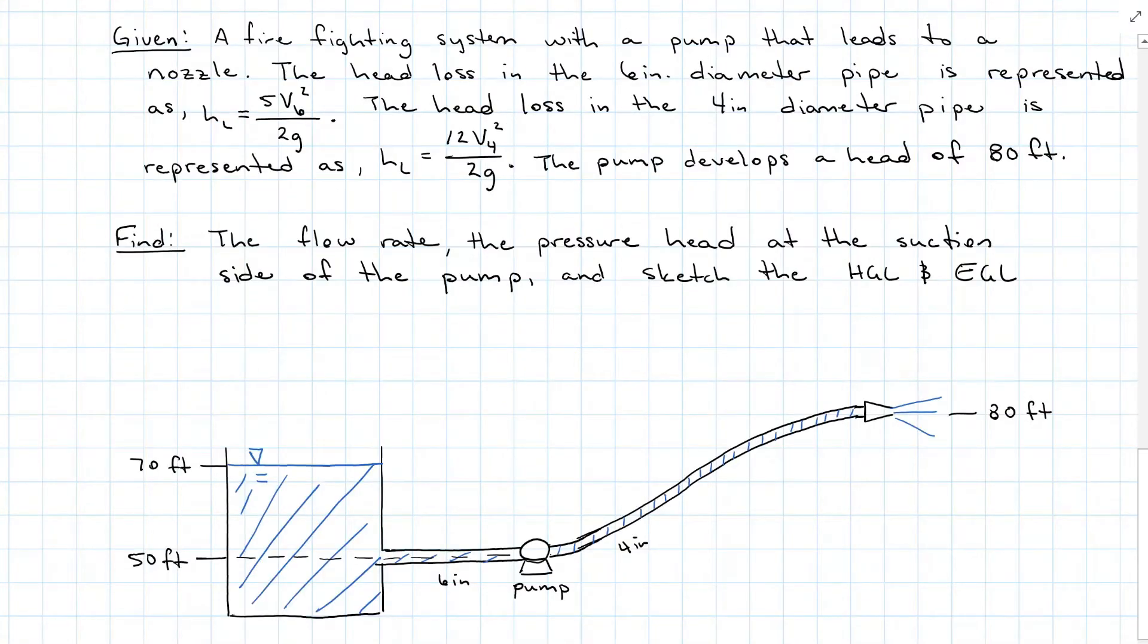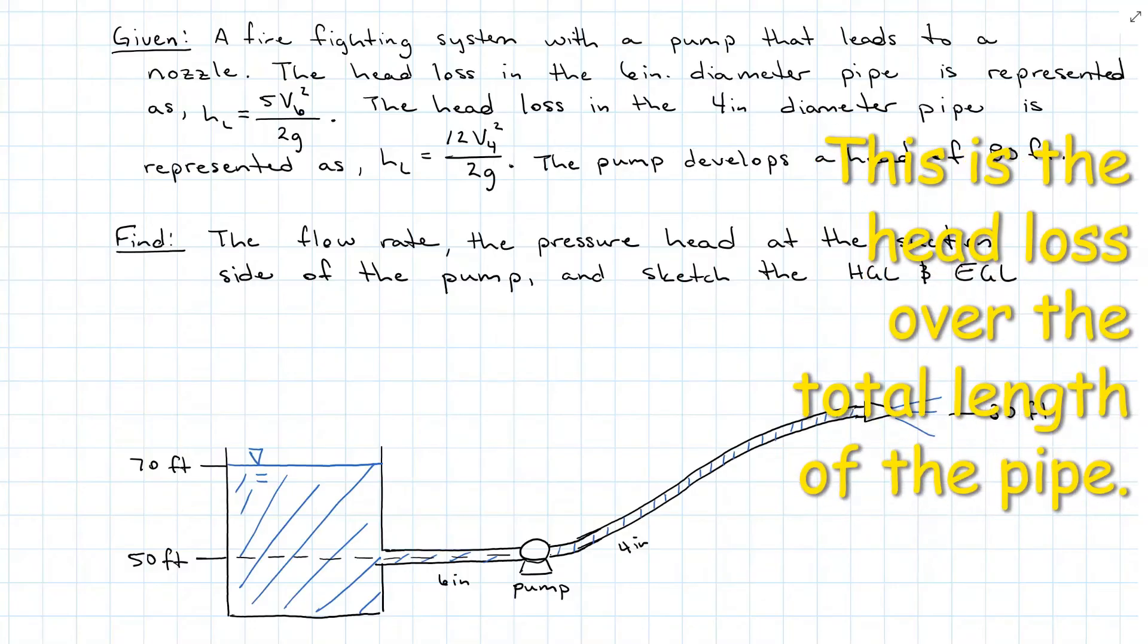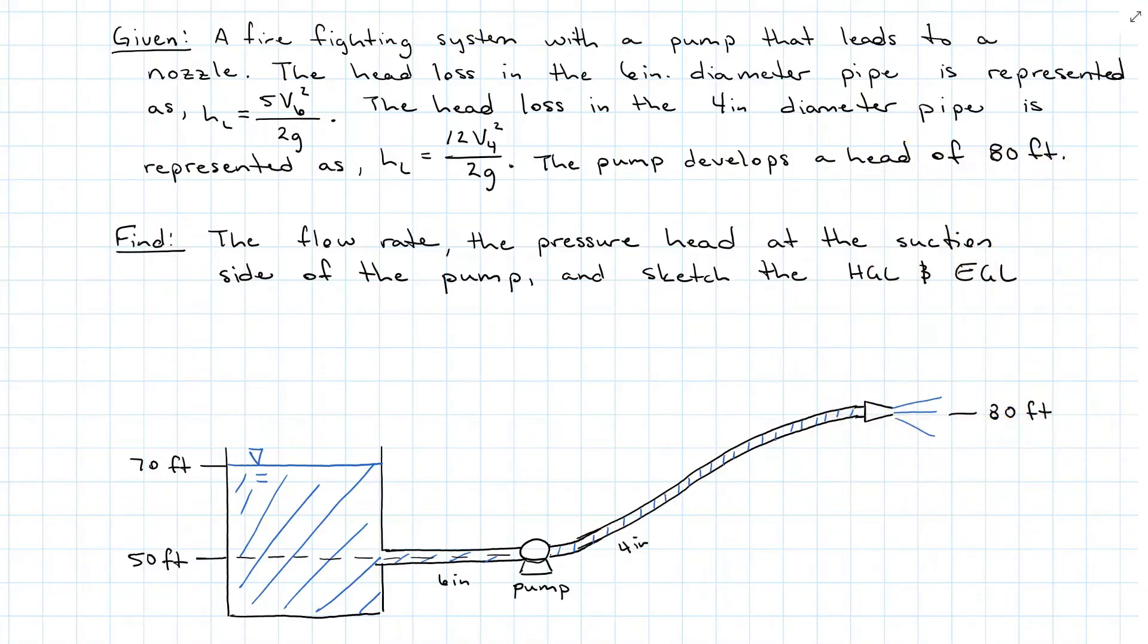For example, we have a firefighting system here that has a pump that leads to a 4 inch diameter pipe with a nozzle, and the pipe coming into the pump is 6 inches in diameter. The pump adds 80 foot of head, but we also have some head loss in our 6 inch pipe and 4 inch pipe. So that's given to us as equations for the velocity head. So the 6 inch pipe loses 5 times the velocity head, and the 4 inch pipe loses 12 times the velocity head over the length. We want to find the flow rate through the system, the pressure head at the suction side of the pump, and we want to sketch the hydraulic grade line and the energy grade line.